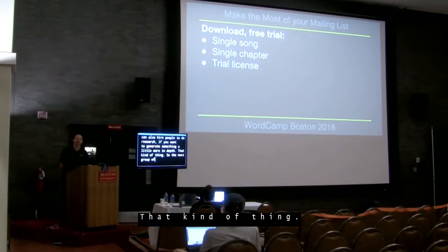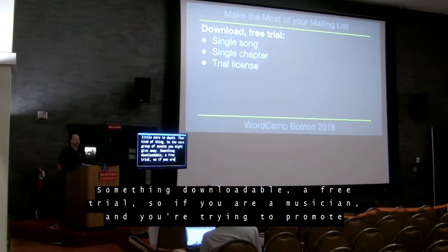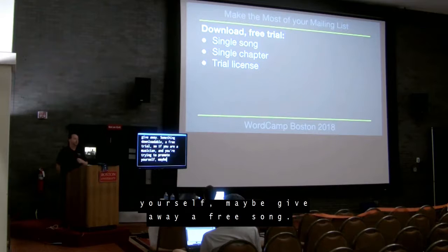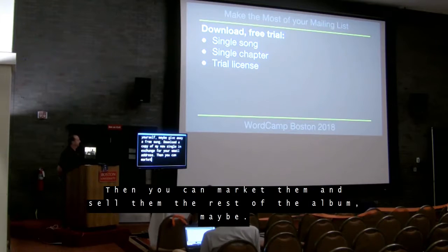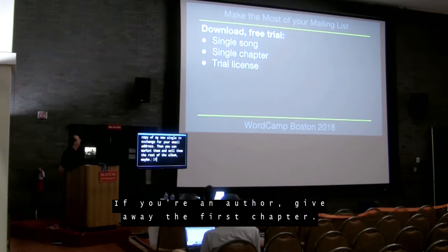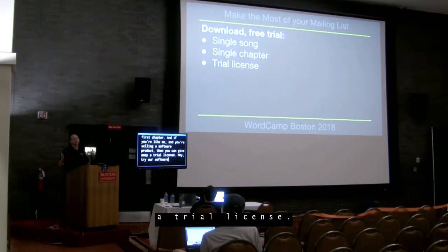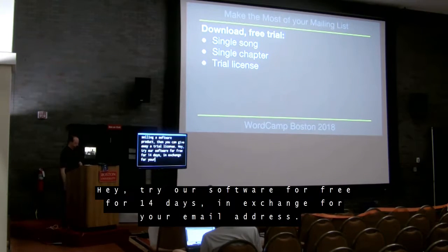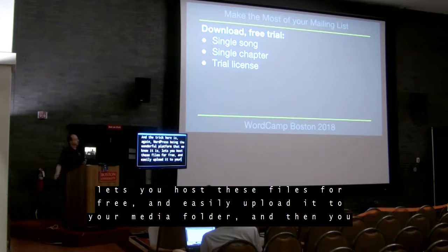The next group of assets you might give away: something downloadable or a free trial. If you're a musician trying to promote yourself, give away a free song — download a copy of my new single in exchange for your email address, then you can market to them and sell them the rest of the album. If you're an author, give away the first chapter. And if you're selling a software product like me, you can give away a trial license — try our software free for 14 days in exchange for your email address. WordPress lets you host these files for free, easily upload to your media folder and link to it.